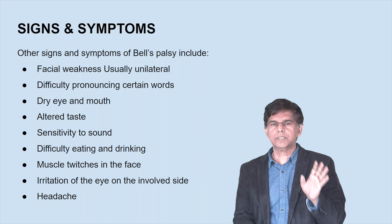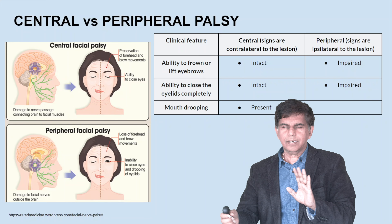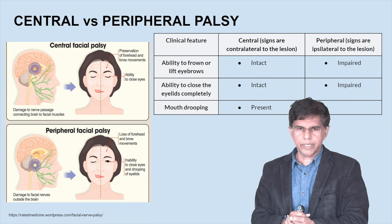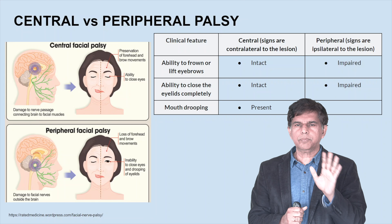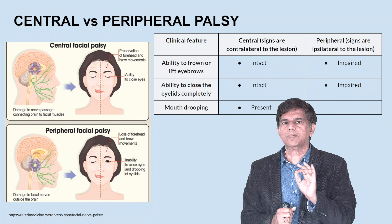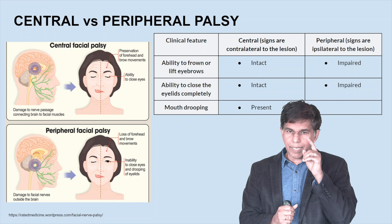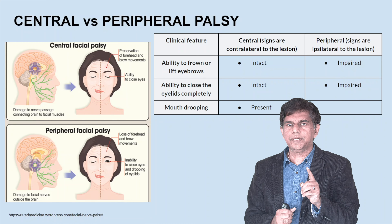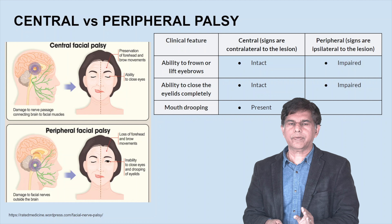The main thing when a patient comes with Bell's palsy is you want to make sure this is not a central lesion — this is a peripheral lesion. Central causes you have to be very, very careful about; you don't want to miss a central etiology like stroke. Look at the clinical features in the picture: if it is central, ability to frown and lift eyebrows remains intact, and ability to close the eyelid completely will be intact, but mouth drooping will be present. In peripheral lesions, ability to frown and lift the eyebrow will be impaired, and ability to close the eyelid completely will be impaired. If it is peripheral facial nerve involvement, that entire side is completely affected, whereas central involvement affects only the lower half of the face.